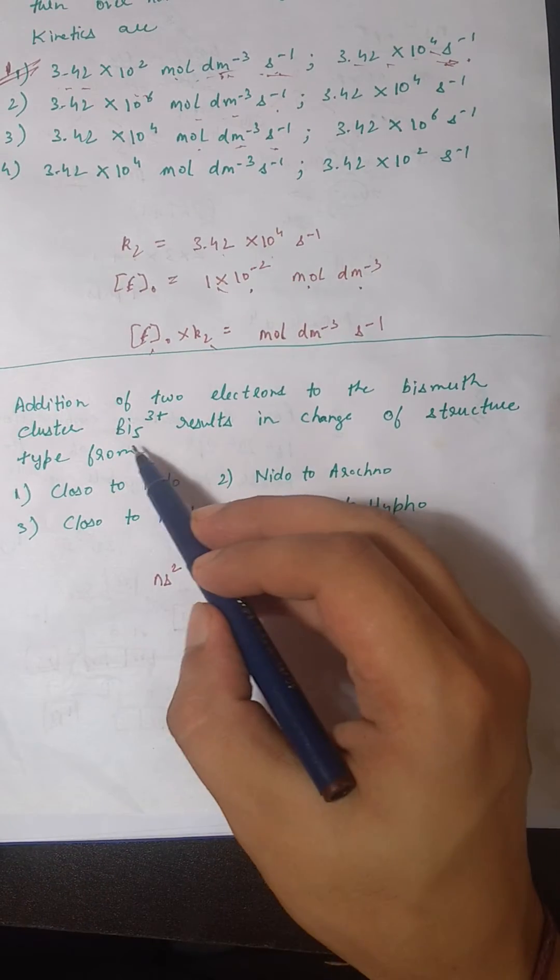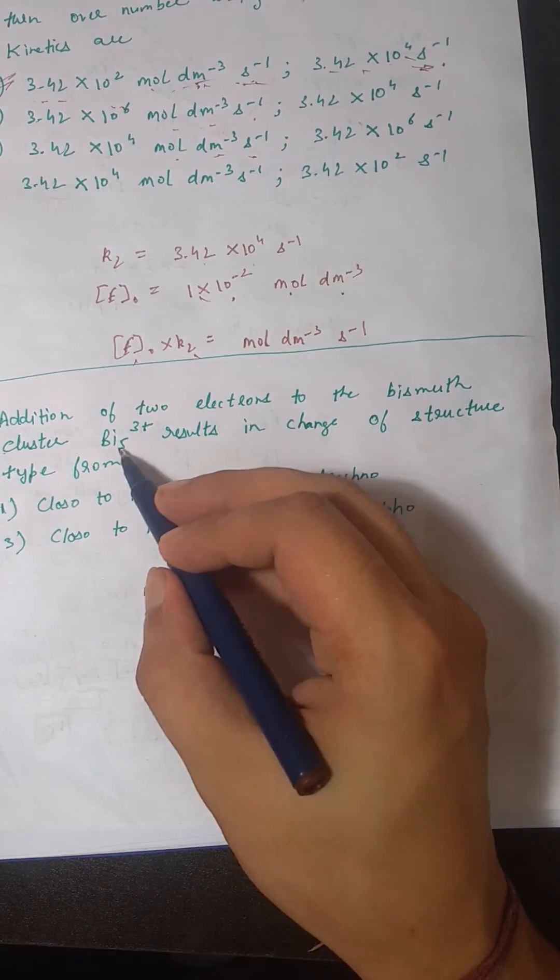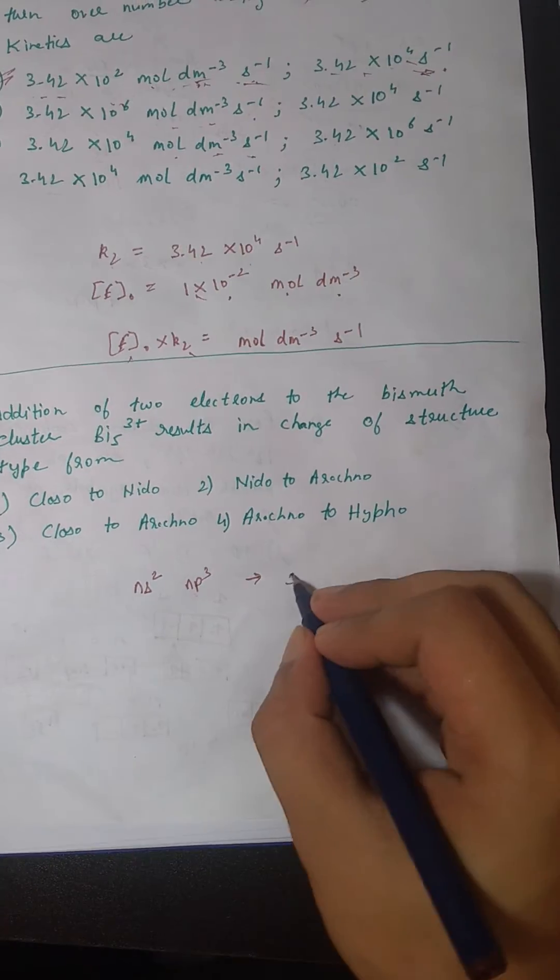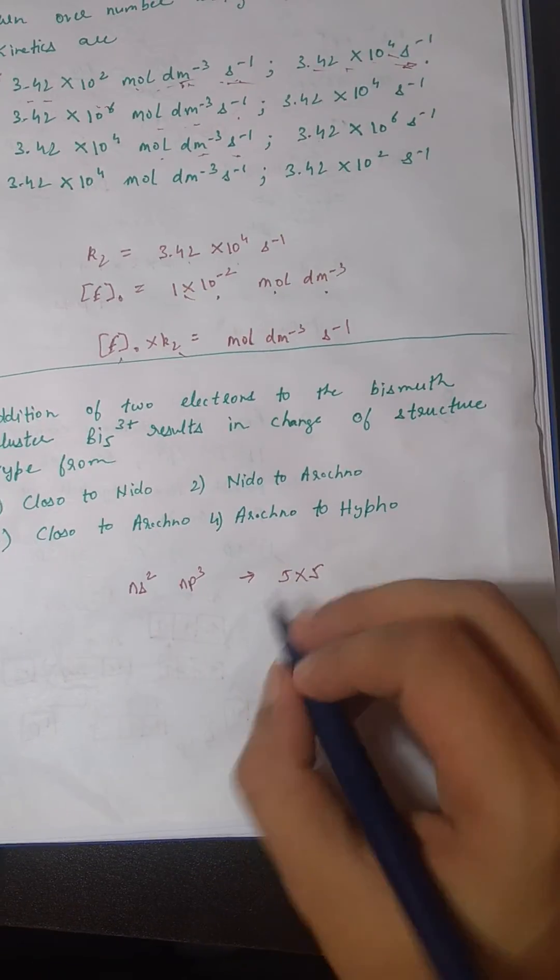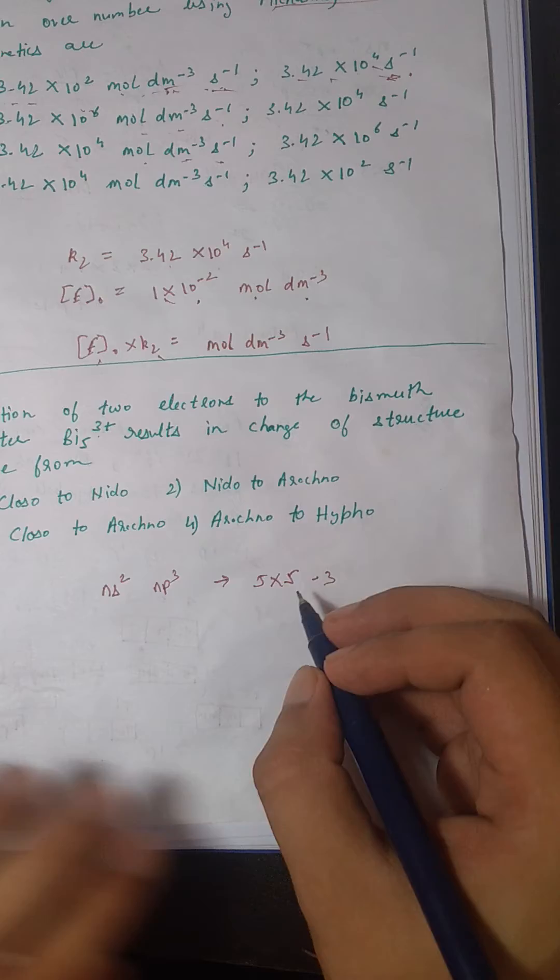Since there are 5 bismuths, the total electrons in this Bi5³⁺ cluster is 5 times 5, minus 3 because of the 3+ charge. So the total electrons in this cluster equals 22 electrons.